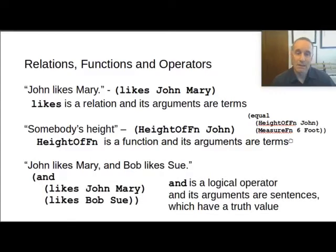And contrast this with an operator like the logical operator and. If we have a sentence, John likes Mary and Bob likes Sue, then the arguments to the operator and are themselves sentences. So it's true that John likes Mary, and it's also true that Bob likes Sue, or it isn't. This can be also a query. And is a logical operator. Its arguments are sentences. Sentences have a truth value. It doesn't make any sense to say the and of John and Sue. What does that mean? That doesn't make any sense. But it does make sense to say that something about John and Sue, that John likes Mary and Bob likes Sue, that that result is true, or we can ask if it's true if it's a query.